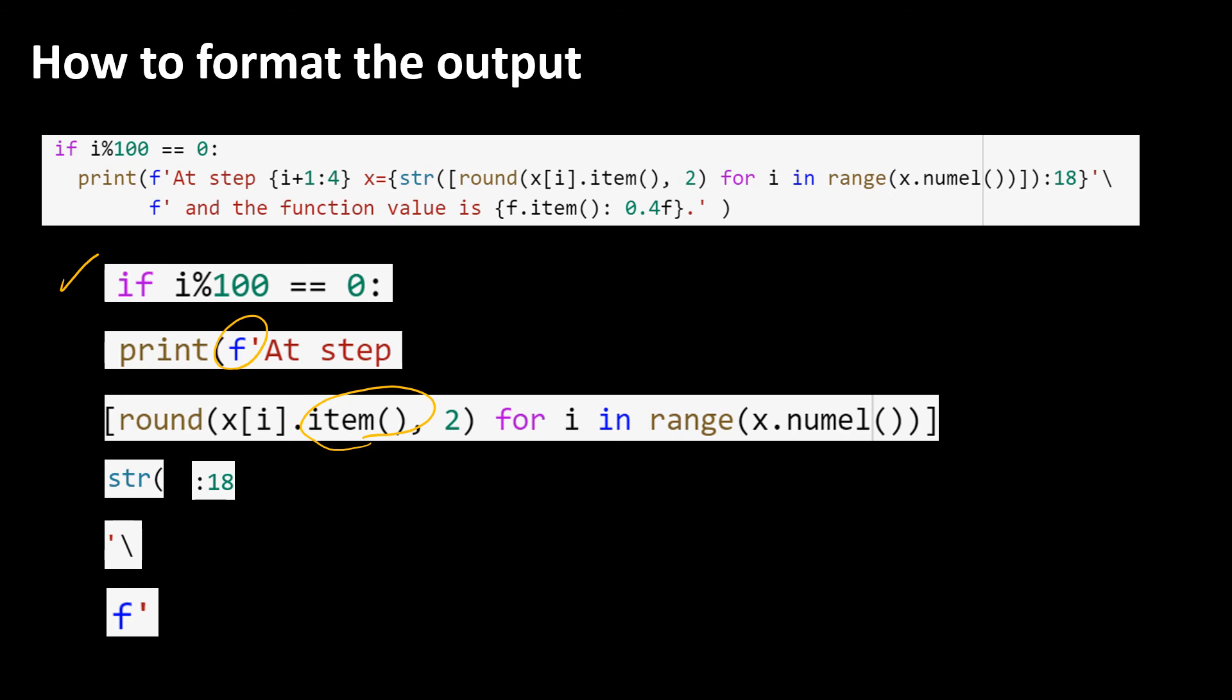Once I have a list I convert that list to a string because I want to have a constant string that takes up only 18 spaces and this right here is a backward slash that helps me to break the print statement into two lines. When you do this make sure that you put another f here.